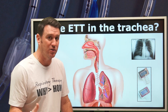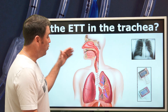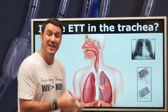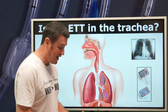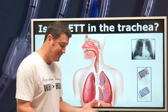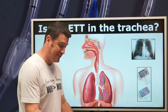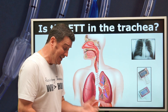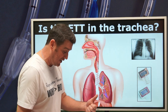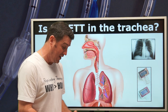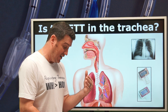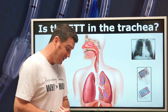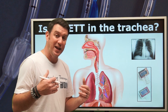So the question is: which tools can we use to confirm we are in the trachea? Egan's does a good job here on page 763, chapter 37, listing multiple methods: auscultation of the chest and abdomen, the light wand, capnometry, colorimetry, bronchoscopy, flexible laryngoscopy, and ultrasound.